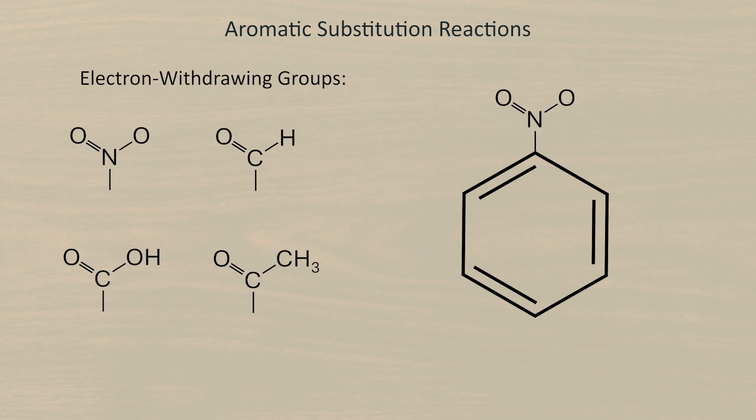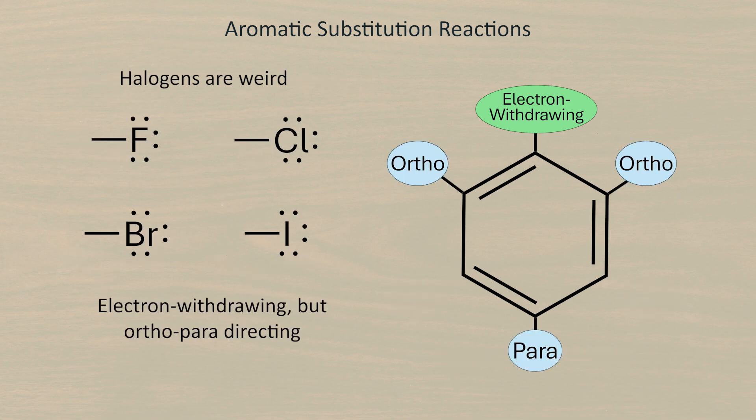Electron withdrawing groups include the nitro group and groups in which the carbonyl carbon of things like aldehydes and carboxylic acids are attached to the ring. These will direct the electrophile to the meta or carbon 3 position. Halogens are something of an exception to this. They're considered electron withdrawing because of their electronegativity, but for reasons I'll mention in a minute they're still ortho-para directors.